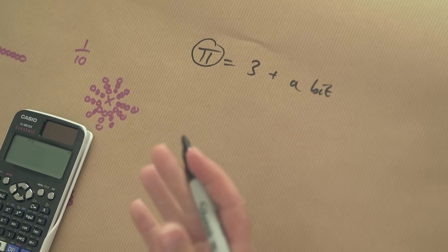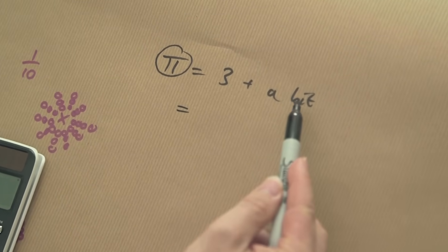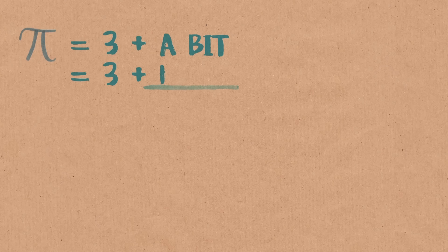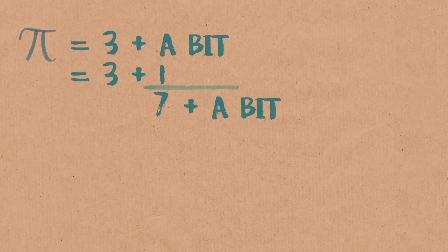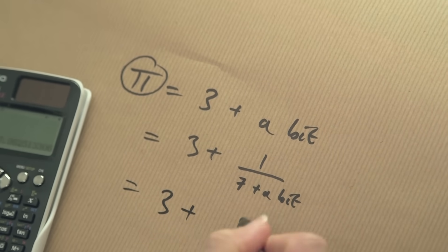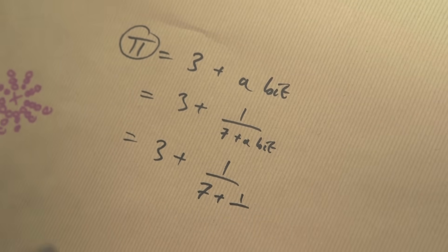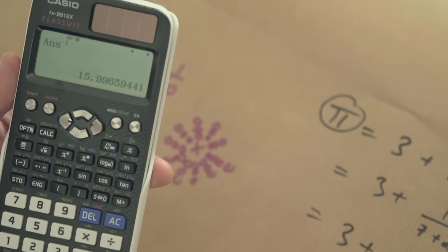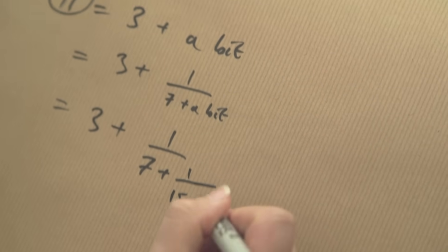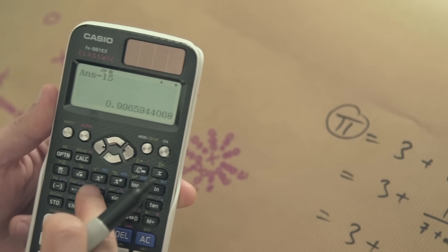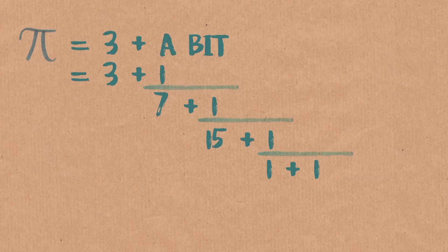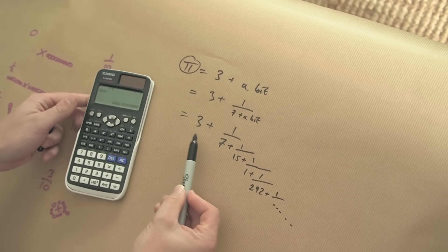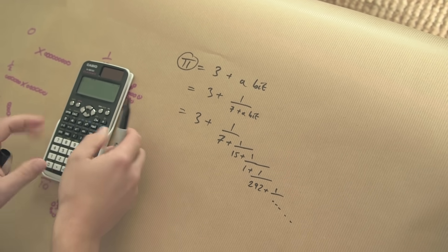Pi is 3 plus a bit. Since that bit is less than 1, I can write it as 3 plus 1 over something. On a calculator, taking away 3 and doing 1 over what's left gives 7-point-something. So it's 3 plus 1 over (7 plus a bit). Continuing, that bit gives 15 and a bit, then 1 and a bit, then 292. This is called the continued fraction for pi. Something very obvious: you get a very large number — 292 — appearing, meaning if you chop the continued fraction just before it, you get a ridiculously good rational approximation.